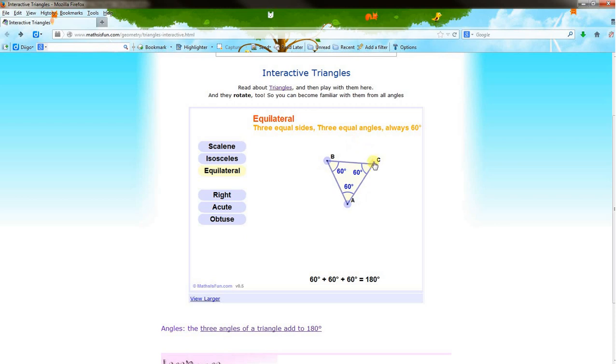The second way that we classify triangle by the side is by an isosceles triangle. An isosceles triangle means that at least two sides are congruent, or they are the same length.